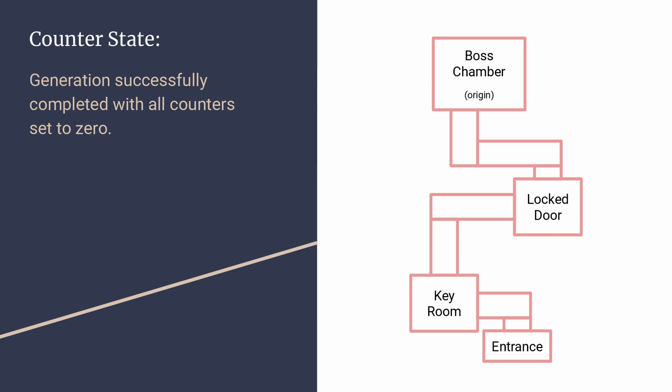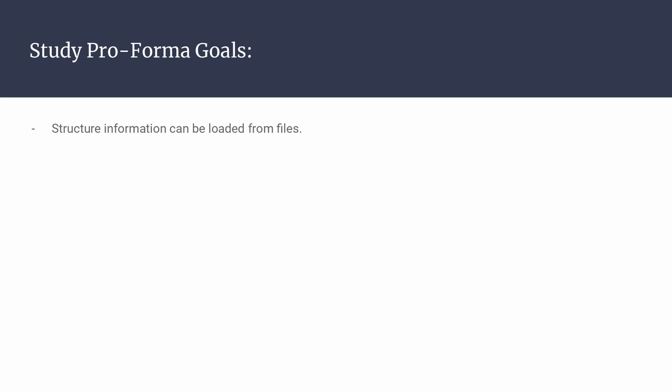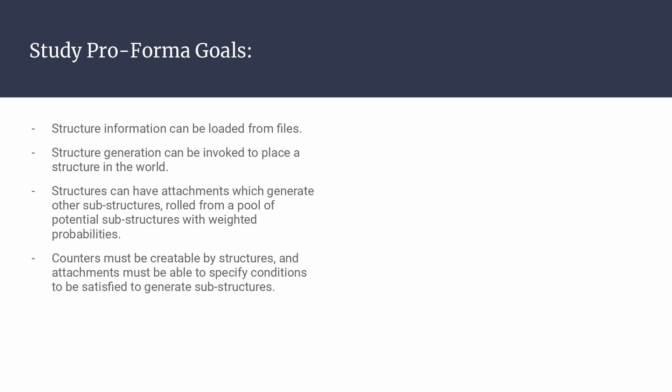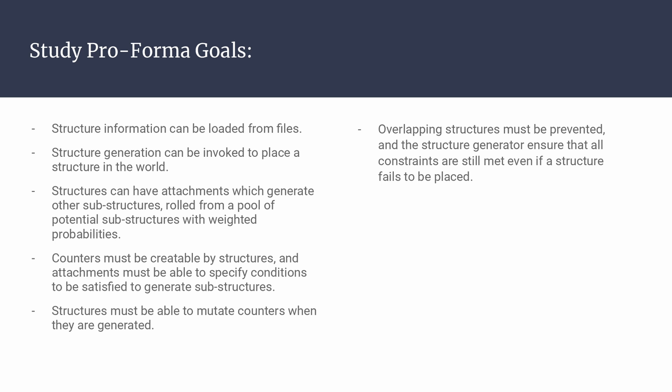This was the core idea I approached Professor Esty with when proposing the self-directed study. My proforma included the following goals: structure information can be loaded from files; structure generation can be invoked to place a structure in the world; structures must be able to have attachments which generate other substructures and roll from a pool of potential substructures with weighted probabilities; counters must be creatable by structures; and attachments must be able to specify counter conditions that must be satisfied for certain structures to generate. Overlapping structures should be prevented, and the generator must handle this to ensure all constraints are still met.